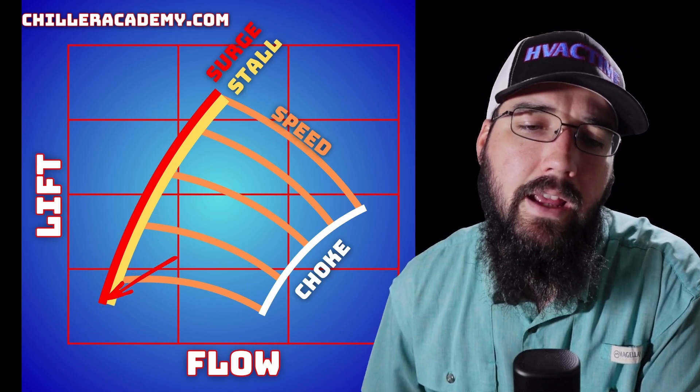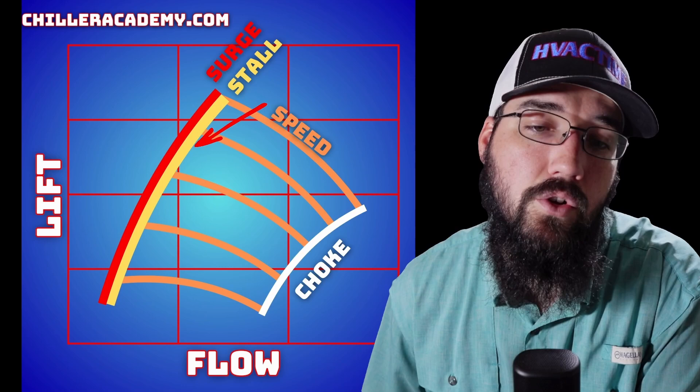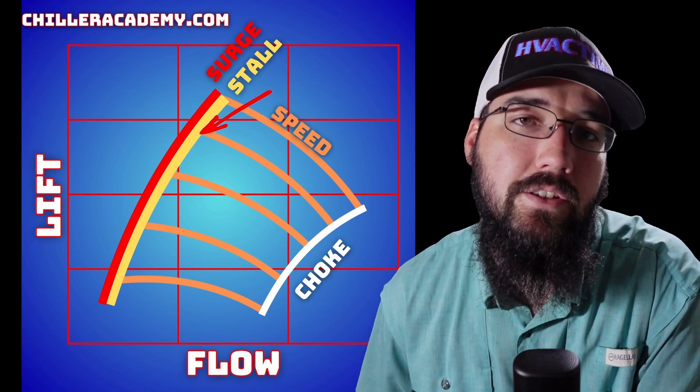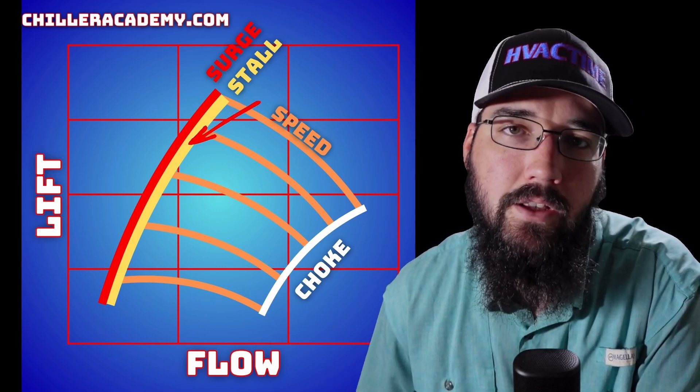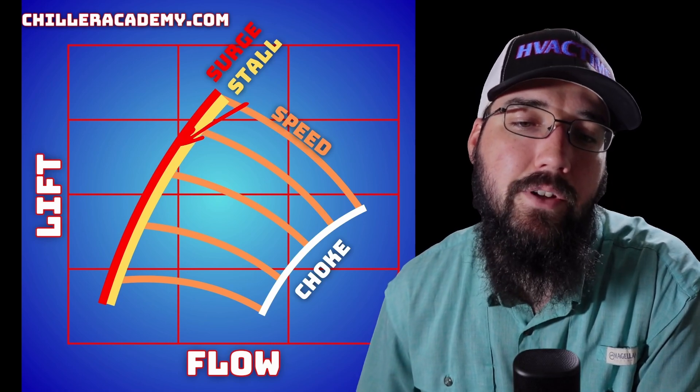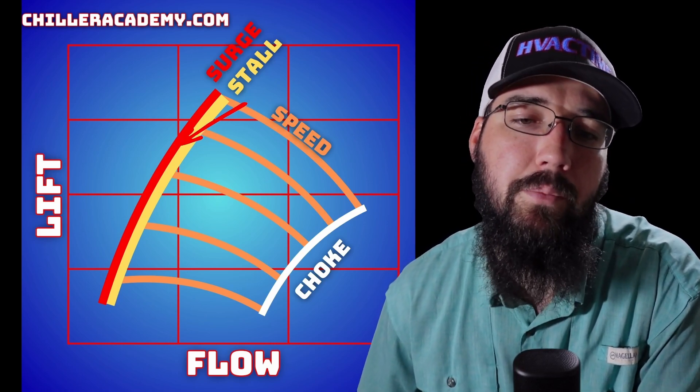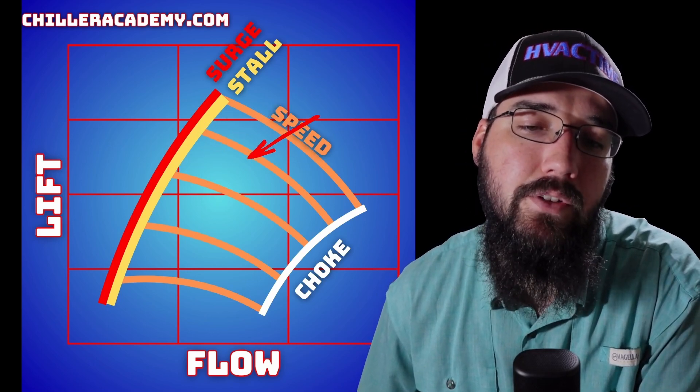Stall precedes a surge. When you get into an early unstable condition just before surge happens, this will typically sound like a low-end grumble or growl from the compressor. Then you'll get a high-pitched screeching or squealing type of noise from the compressor once you move into a surge. The speed of the compressor plays a heavy factor.